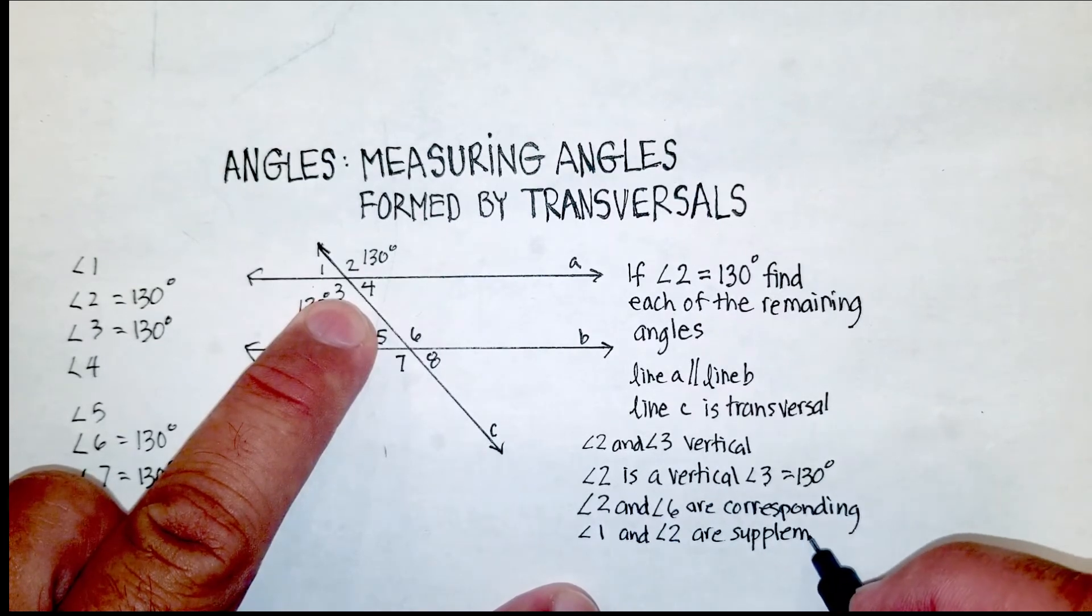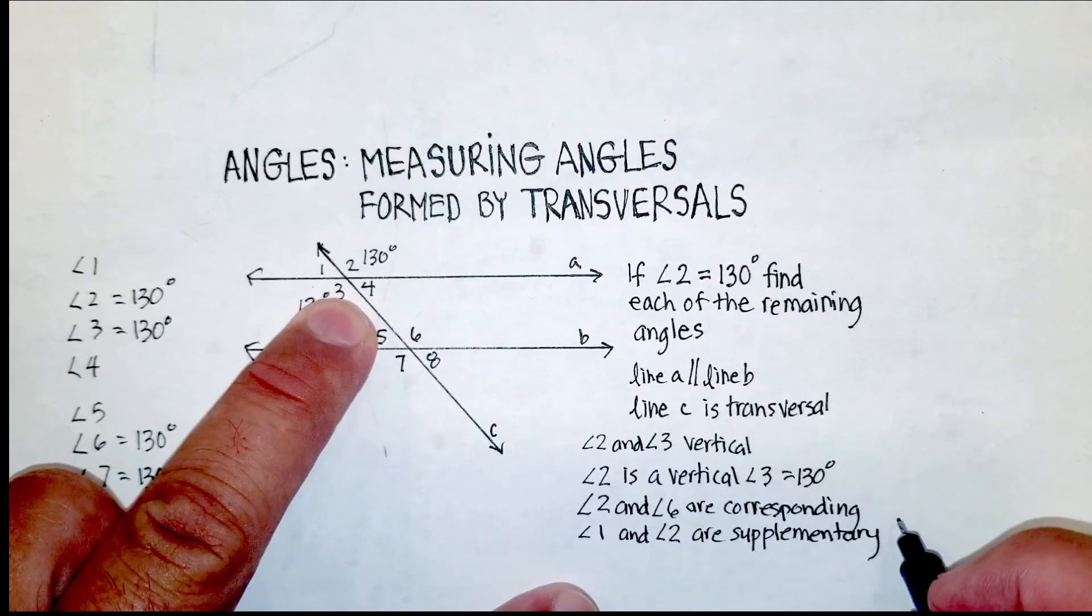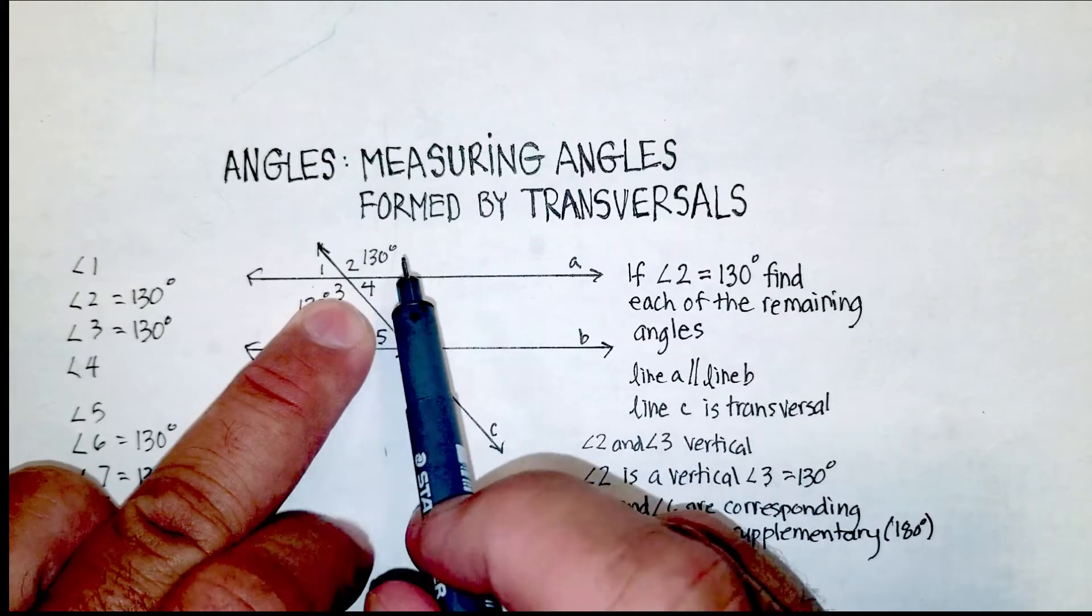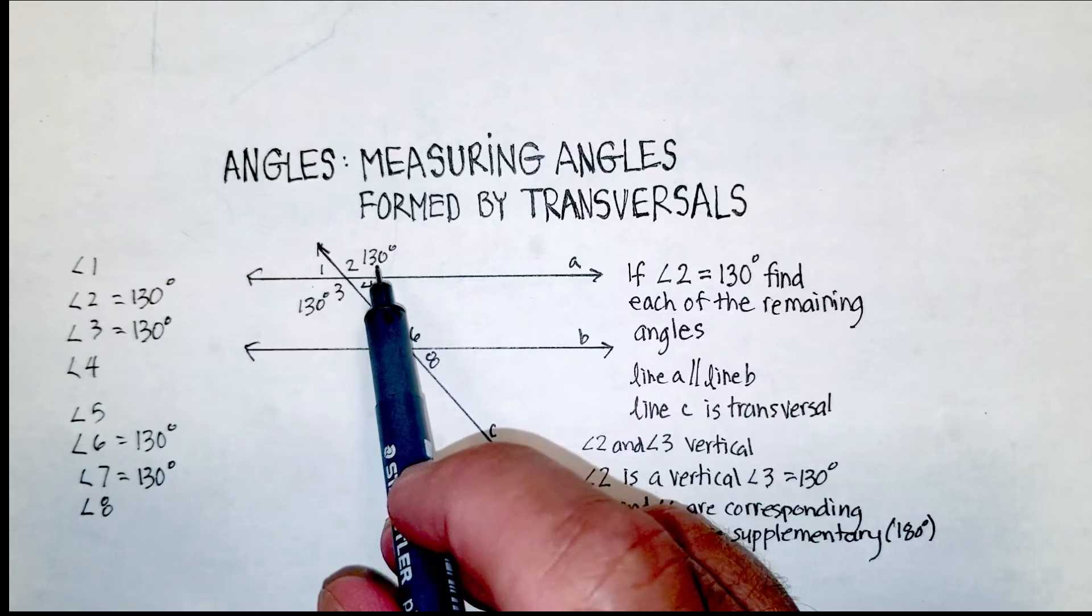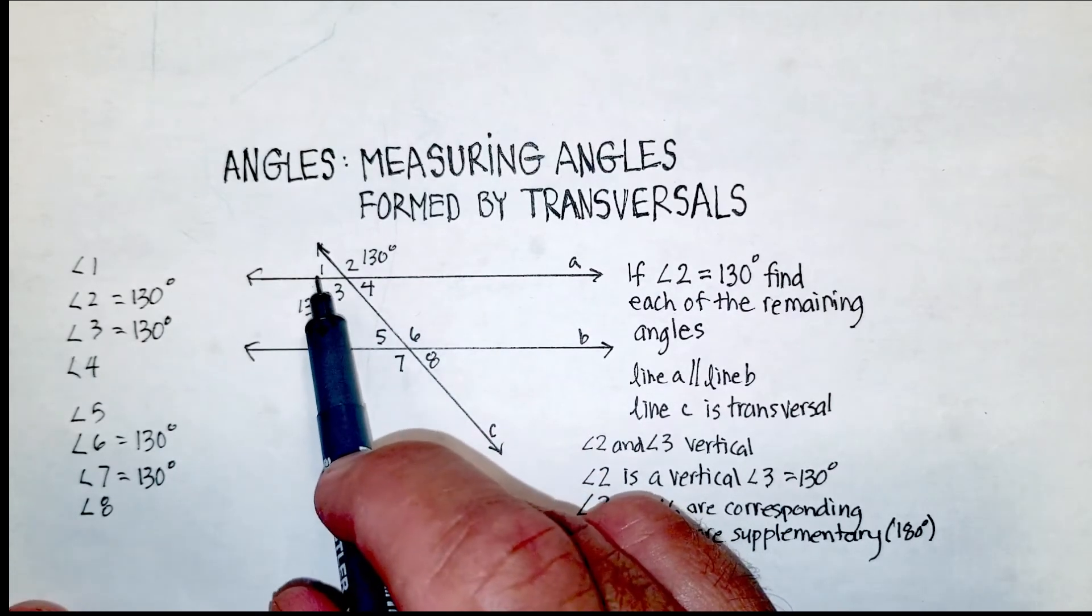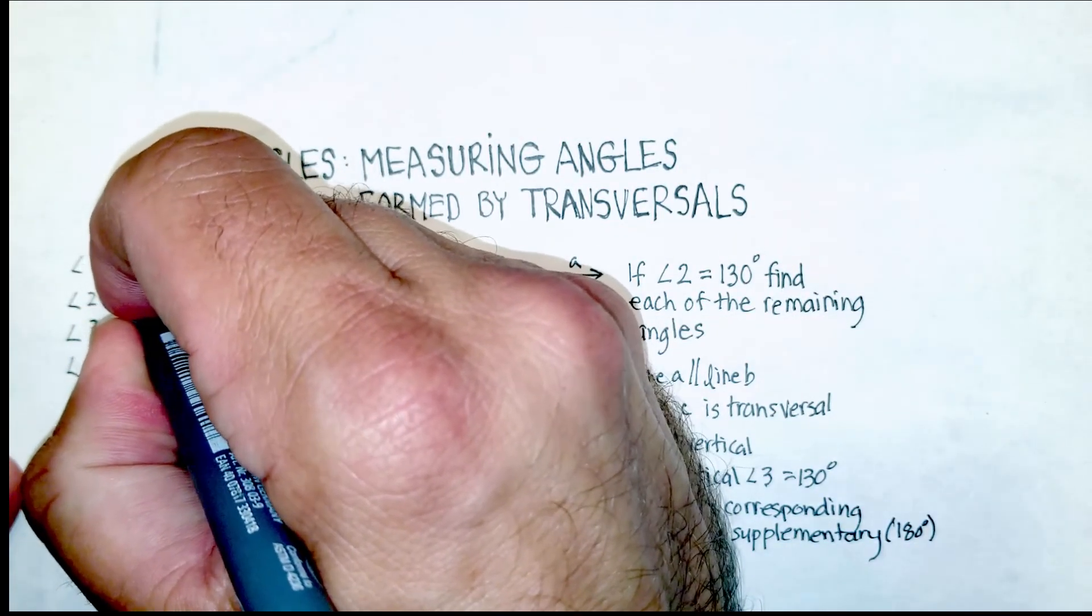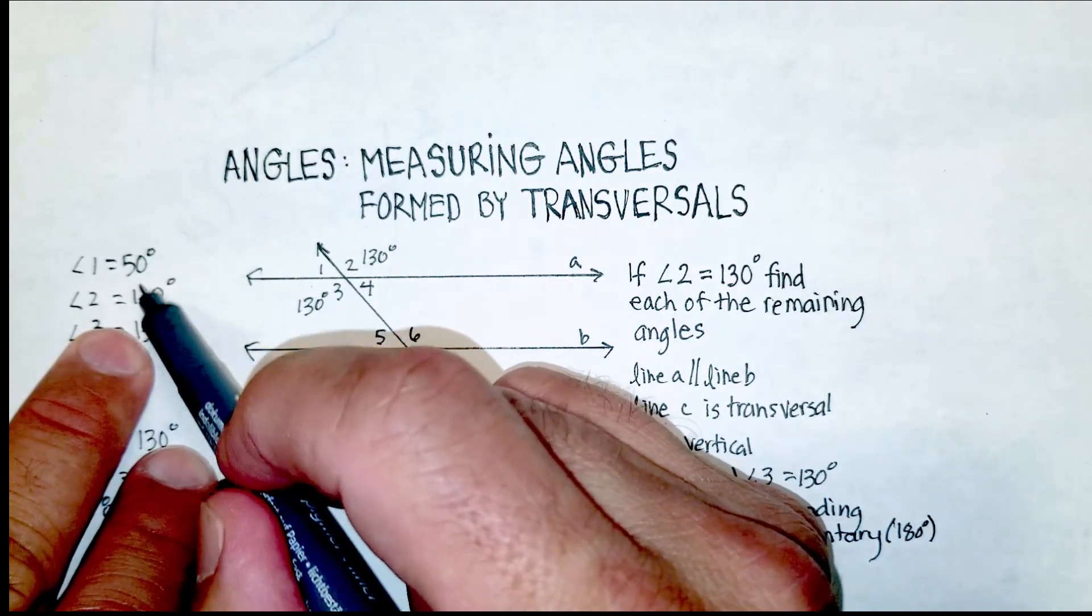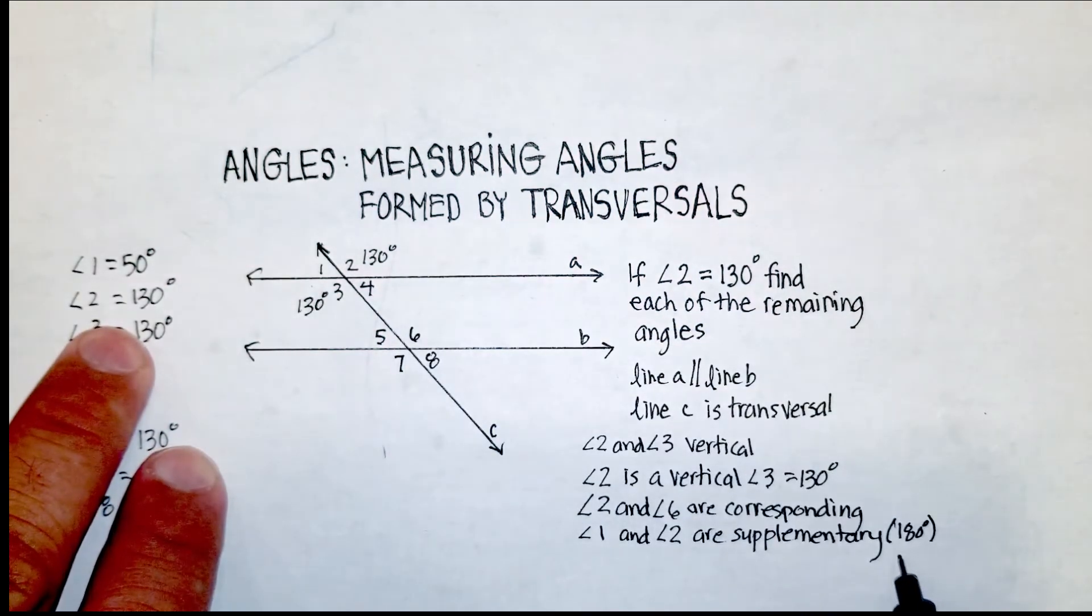So if we already know a line is 180 degrees, and we already know that angle two is 130 degrees, then 130 plus x will equal 180, which means that angle one is 50 degrees, because when I add one and two, I will get 180 degrees or supplementary.